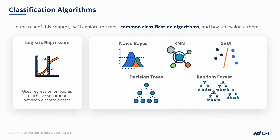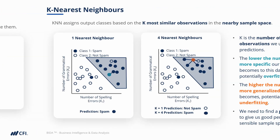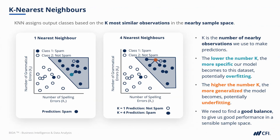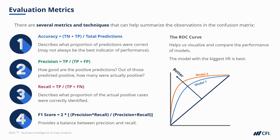On the classification side, we looked at logistic regression, Naive Bayes, KNN, and other algorithms that help us separate different target classes. K-nearest neighbors was a nice example of a very visual algorithm that helps us separate those classes. The evaluation metrics help us to assess the quality of our predictions and how well our model is performing.